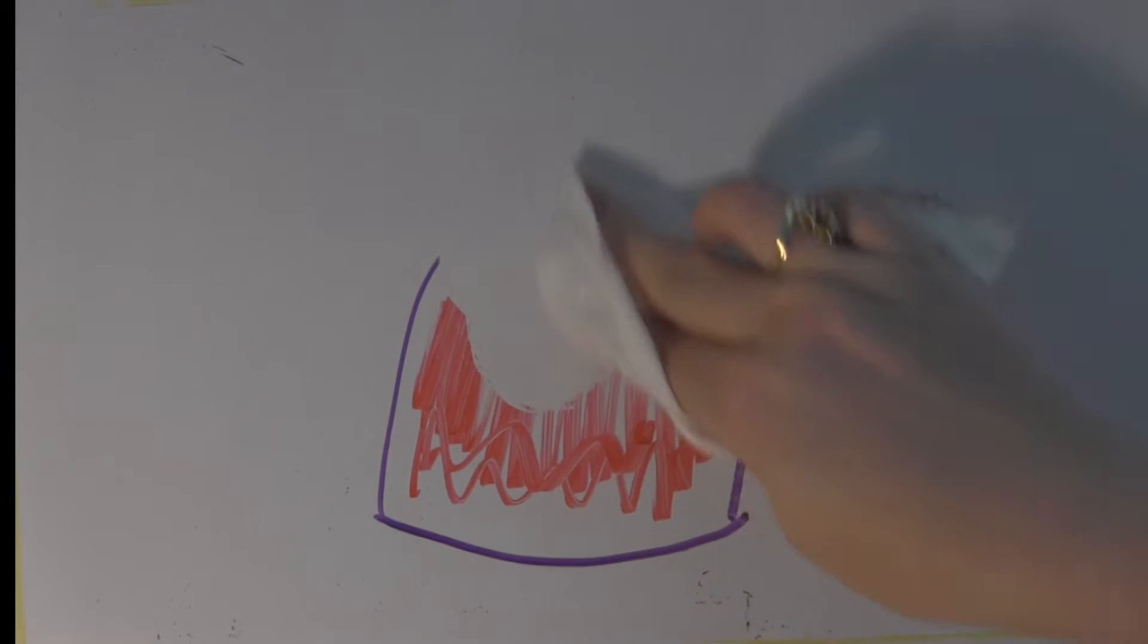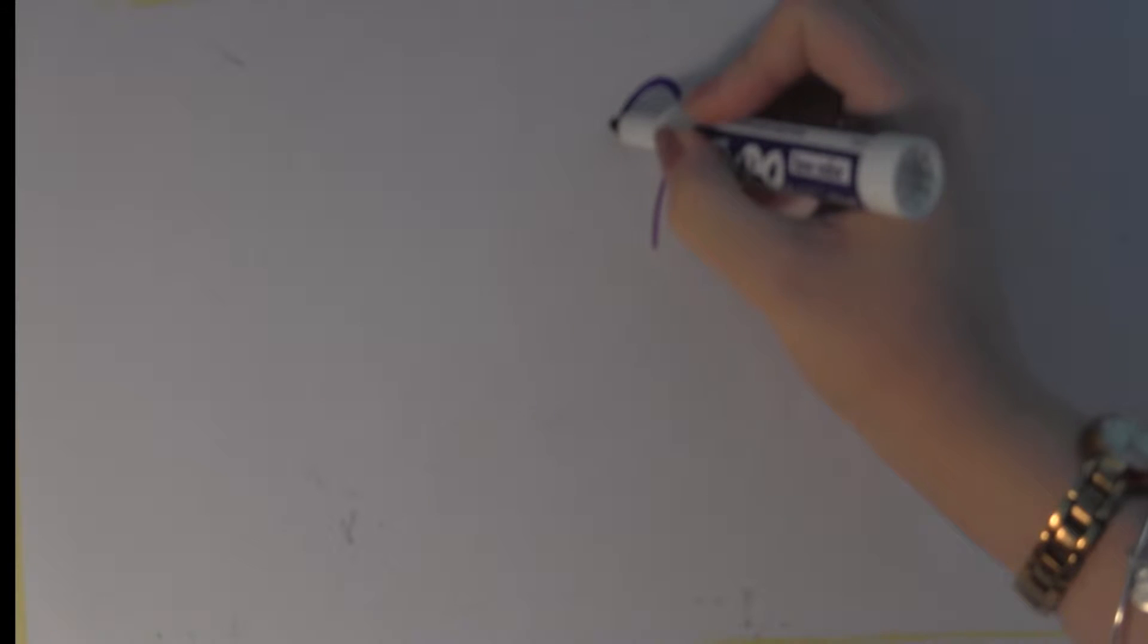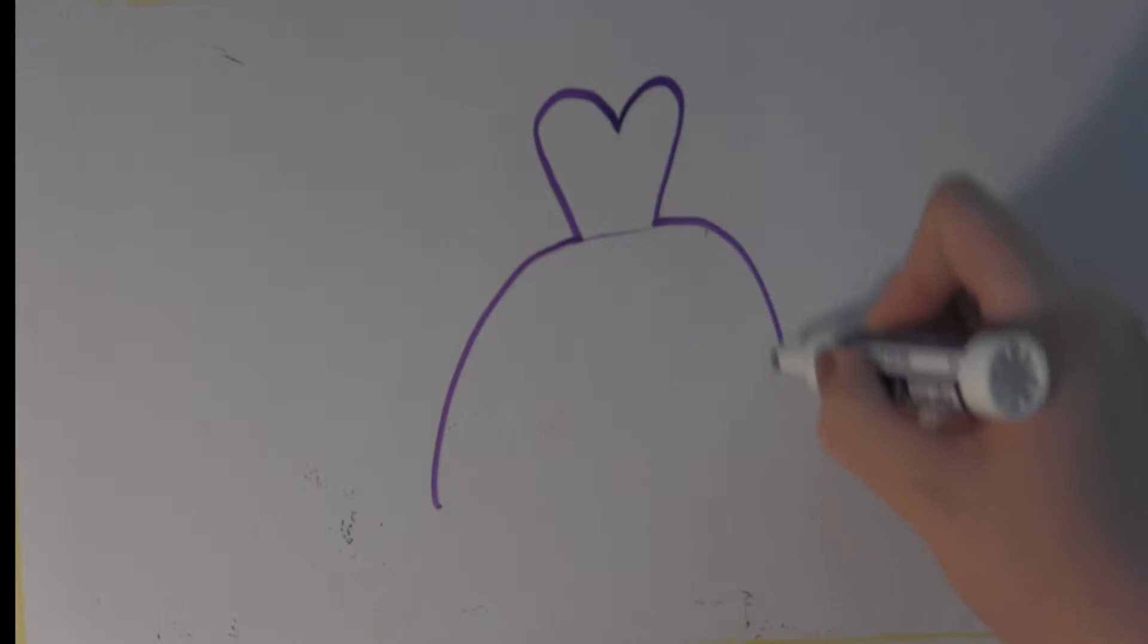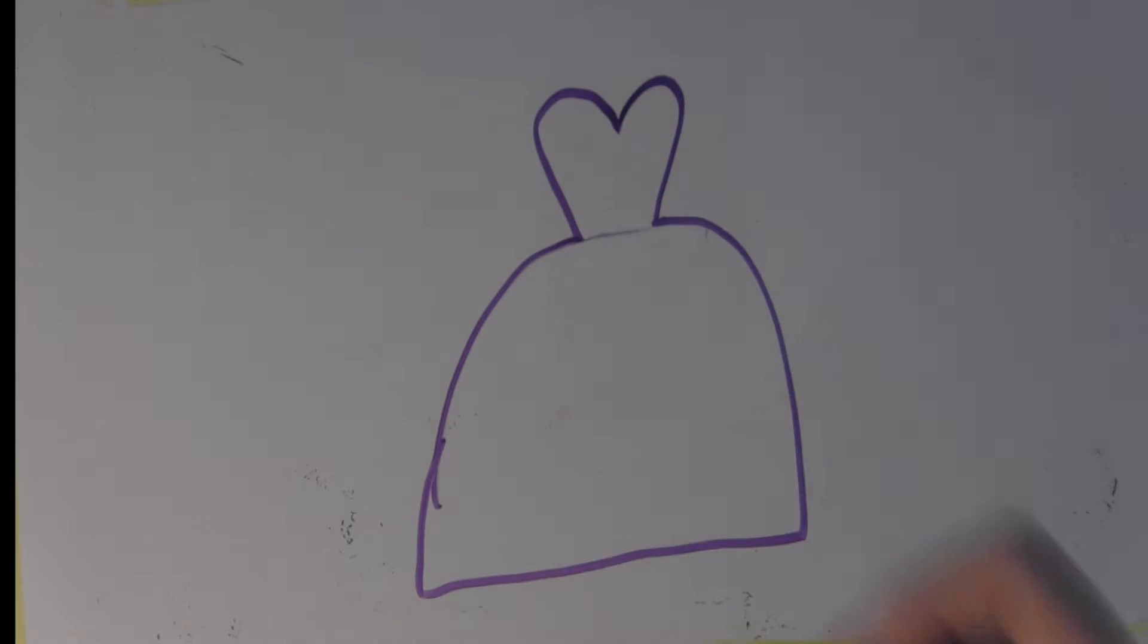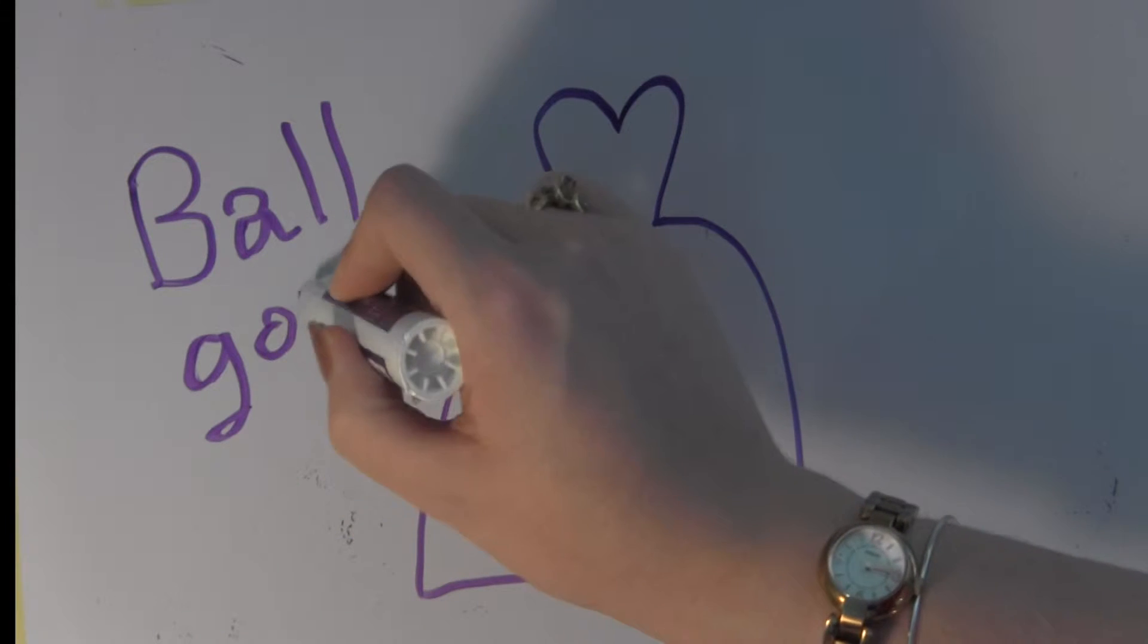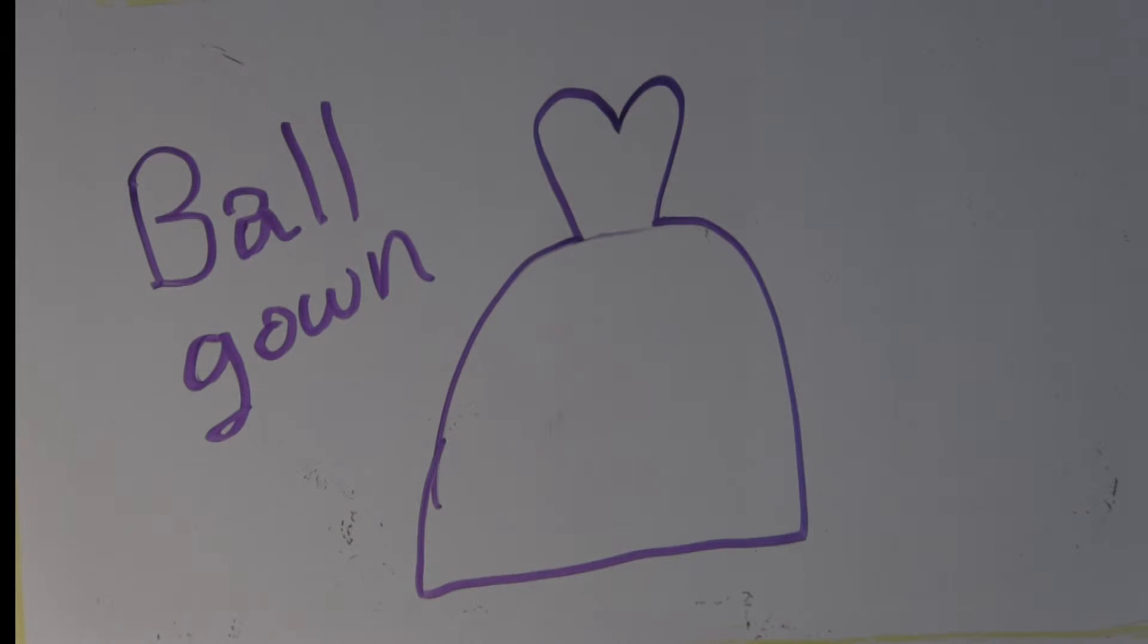First off, we're going to start with a ball gown, just because it's the typical dress people think of when they think of bridal gowns. A ball gown has layers of tulle and crinoline underneath, and that's what gives it its shape. Because of all the layers of tulle, ball gowns can hide the hips, which make it a perfect gown for women that want to conceal those on their wedding day.